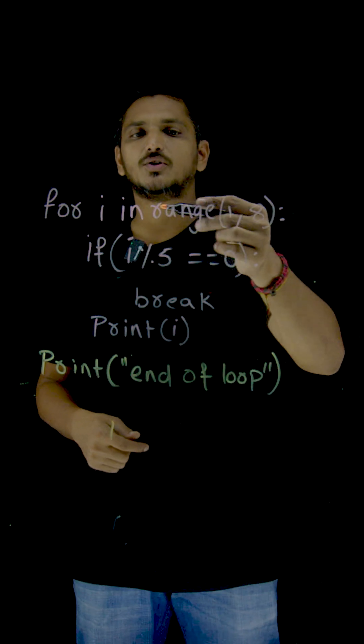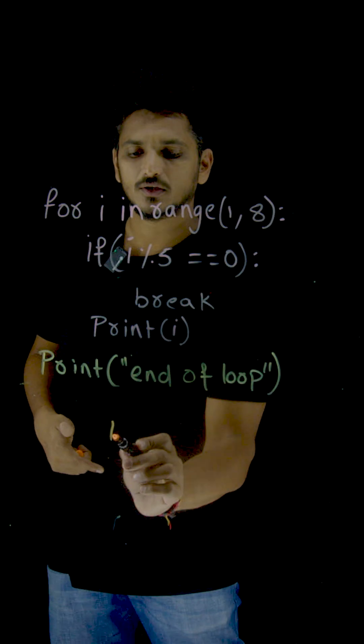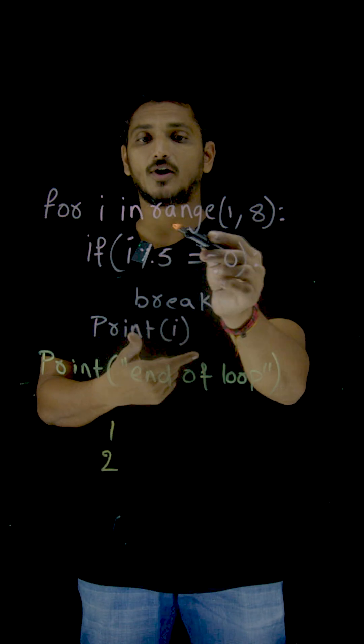Next, i is equal to 2. 2 modulus 5 not equal to 0. So 2 is going to display. Don't go inside the if statement because condition is false.